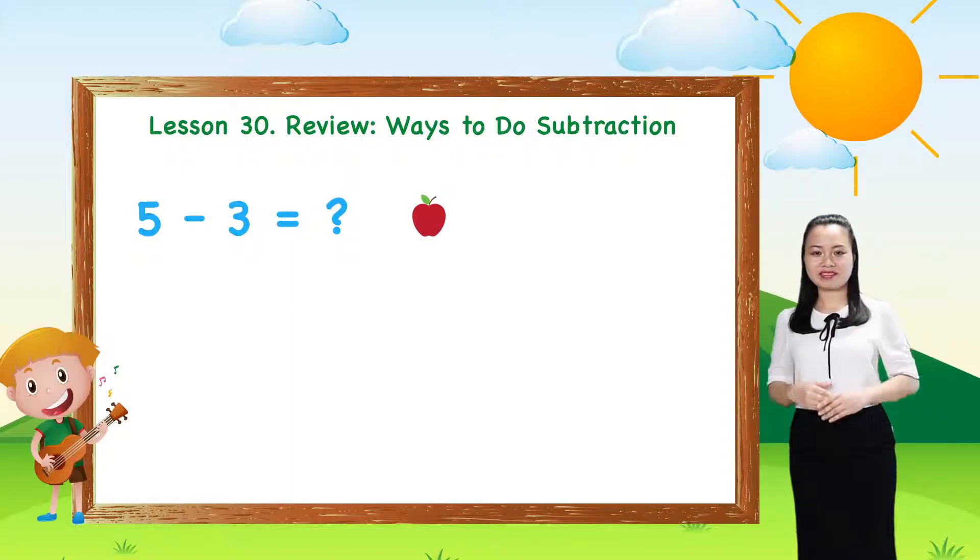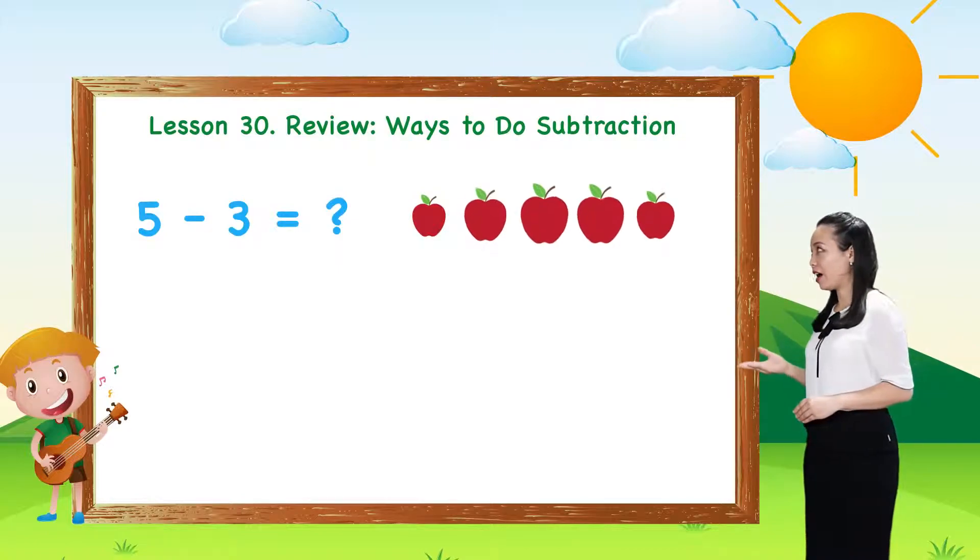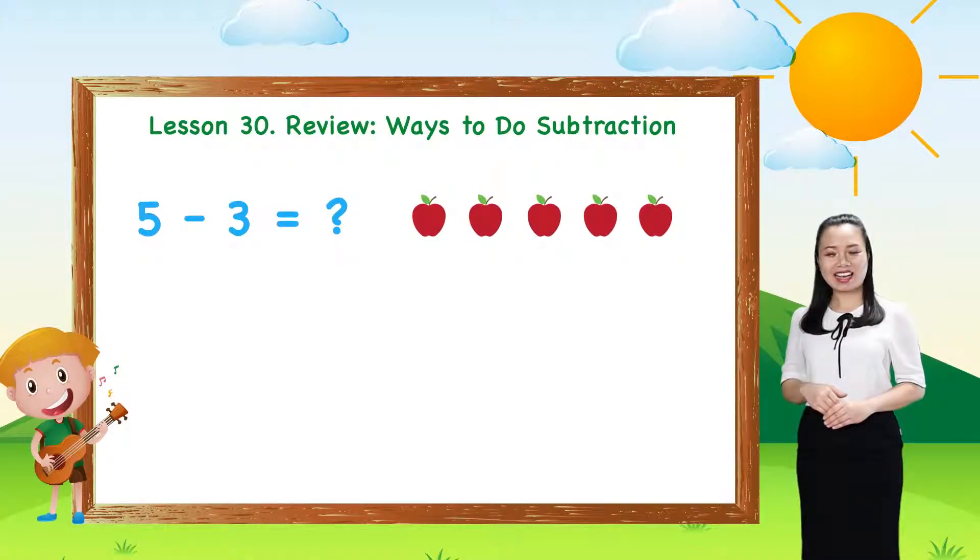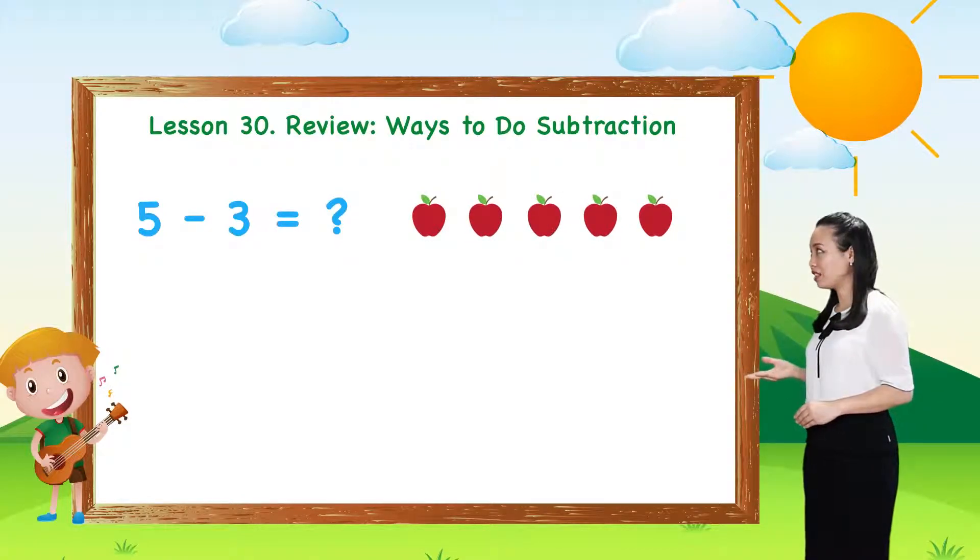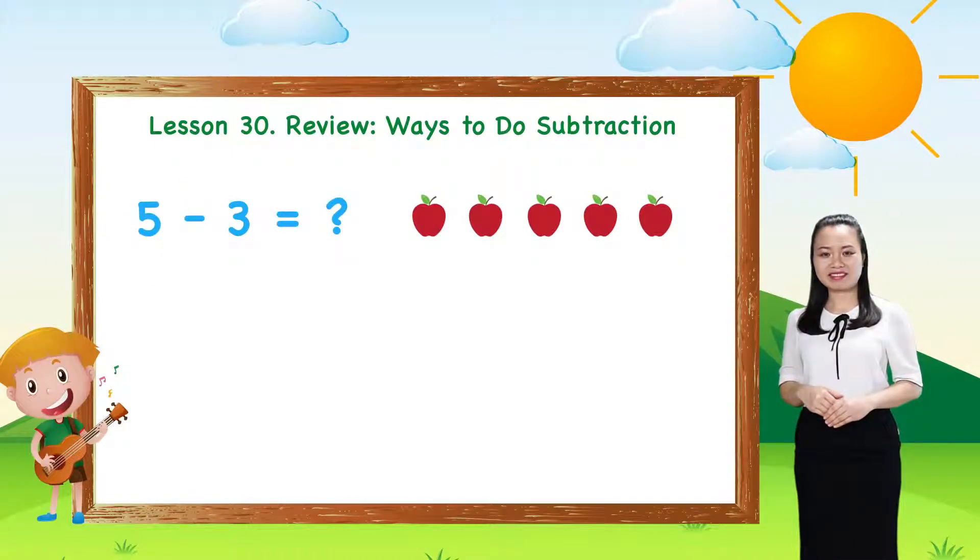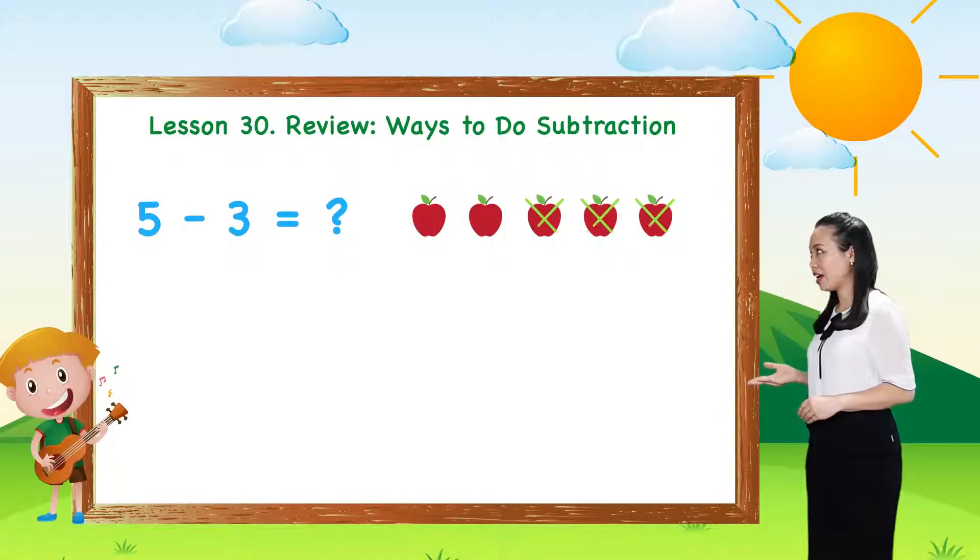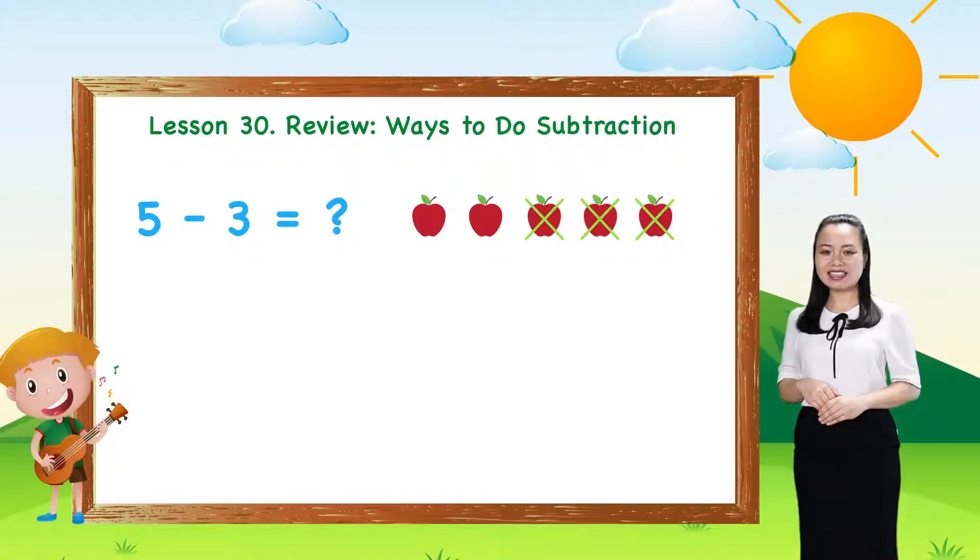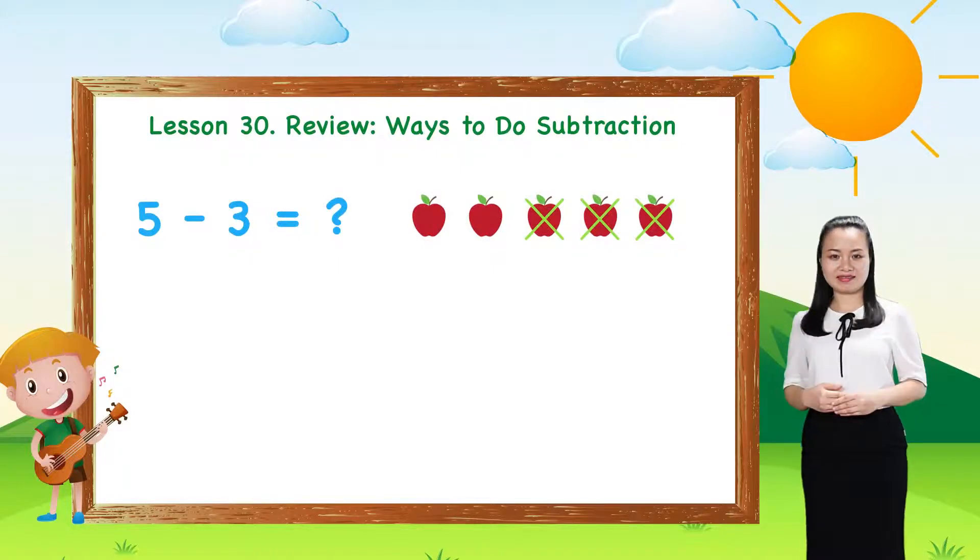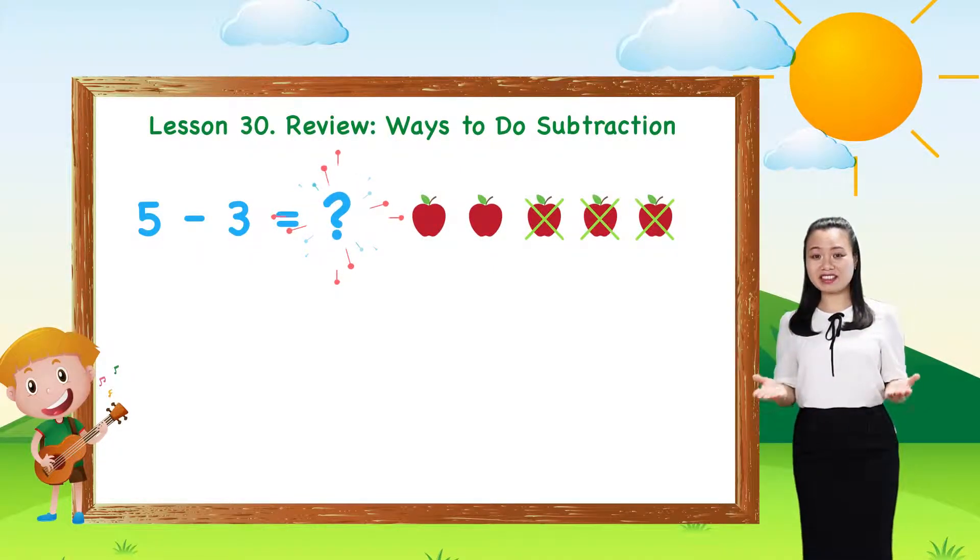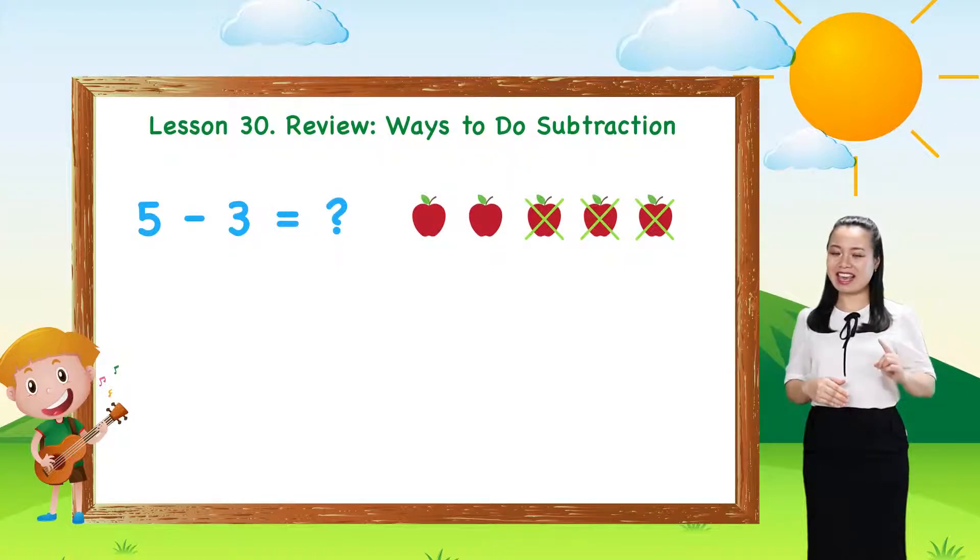Now, I draw 5 apples. Color them red to represent number 5. Next, I cross out 3 apples to indicate subtraction of 3. To find the difference, just count the number of apples left.